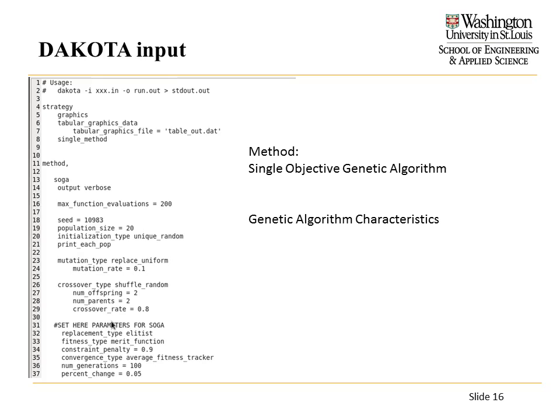It's the same block-based method; really the only thing that changes is the method block. We use a single-objective genetic algorithm with a population size of 20 and 100 generations — so 2,000 total evaluations. There are a few crossover coefficients and number-of-parents settings that I just left at default values.